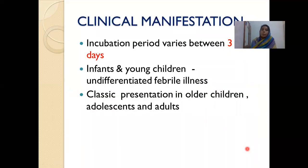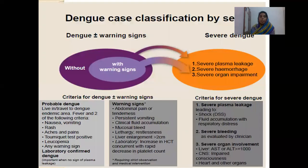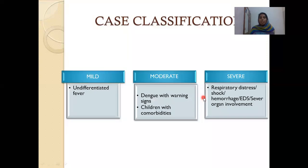Coming to clinical manifestations — the incubation period is about 3 to 7 days. Infants and young children tend to present with undifferentiated febrile illness; classic presentation is seen in older children, adolescents, and adults. By severity, we can divide dengue as: dengue without warning signs, dengue with warning signs, and severe dengue. Another classification is mild, moderate, and severe. Mild means undifferentiated fever, moderate means dengue with warning signs or dengue with comorbidities like heart disease, liver disease, or immunodeficiencies.